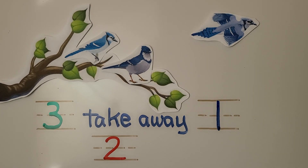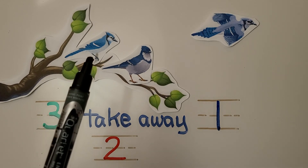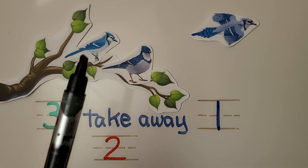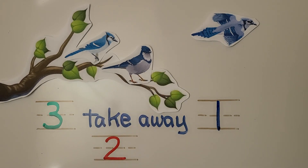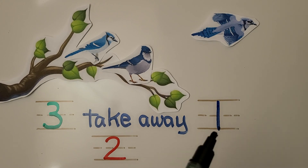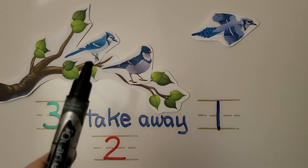One is flying away. We count the number of birds still in the tree. There are one, two. Take away means that something is taken away from a group or a set. There were one, two, three in all, and one is flying away. We have three birds, take away one, that leaves two birds. One, two.